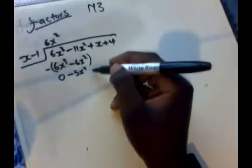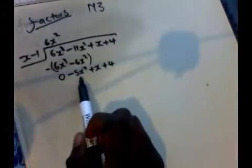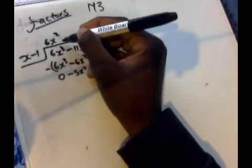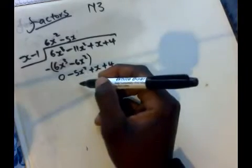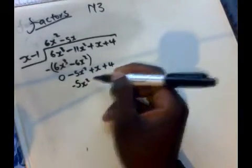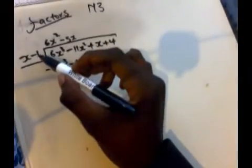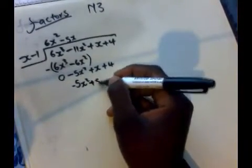We bring down the x. Then we divide negative 5x² by x, which gives us negative 5x. Negative 5x multiplied by x gives us negative 5x². Negative 1 multiplied by negative 5x gives us positive 5x.